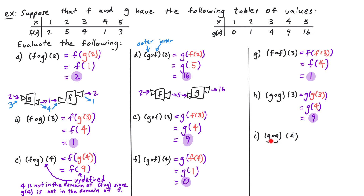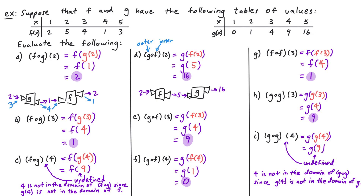Lastly we have g composed with g of 4. By definition this is g of g of 4. We take 4, plug it into g the first time, and we see that g of 4 gives us 9. So we replace g of 4 with 9. Now we want to take g of that number, but we notice that in our table for g there is no entry for when the input x is equal to 9. So g of 9 is undefined, which means g composed with g of 4 is also undefined — 4 is not in the domain of g composed with g since g of 4 is not in the domain of g.